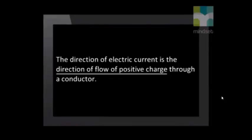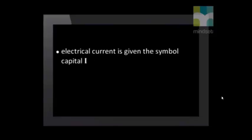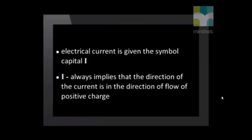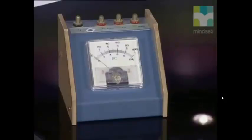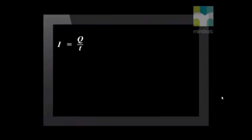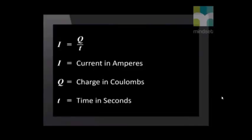The direction of electric current is the direction of flow of positive charge through a conductor. Note that electric current is given the symbol capital I. Capital I always implies that the direction of the current is in the direction of flow of positive charge. We measure electric current with an instrument called an ammeter. The unit of current is the ampere, symbol capital A. Charge is measured in coulombs, so 1 ampere is equal to 1 coulomb per second. We can represent this in an equation where I equals Q divided by T: I is current in amperes, Q is charge measured in coulombs, and T is time measured in seconds.